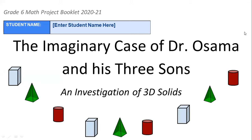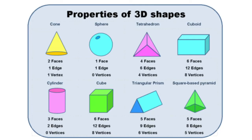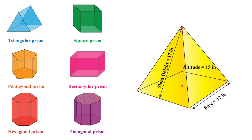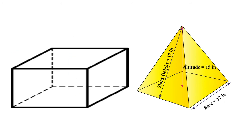Our project is about 3D solids. Solids are classified into two kinds: prisms or pyramids. The prism has two bases parallel to each other, but the pyramid has only one base and one top. Let us start with the first shape.